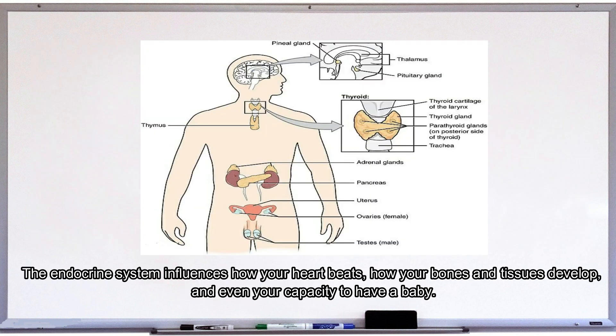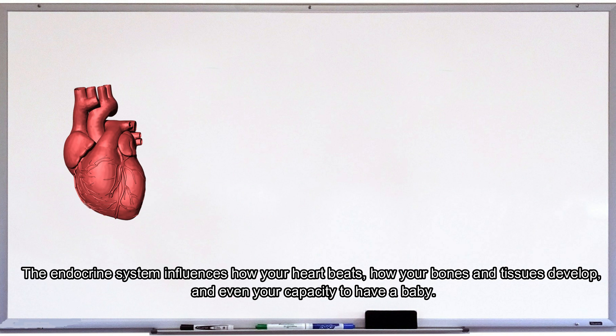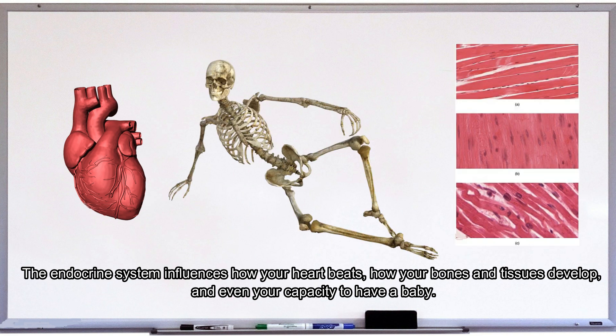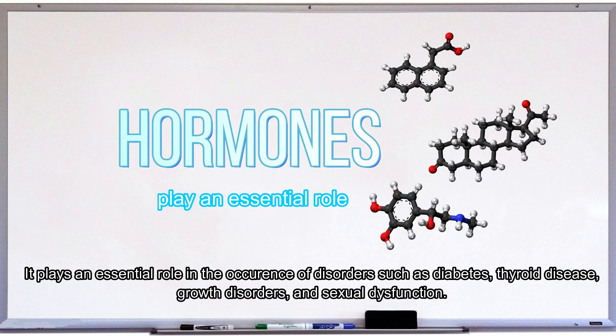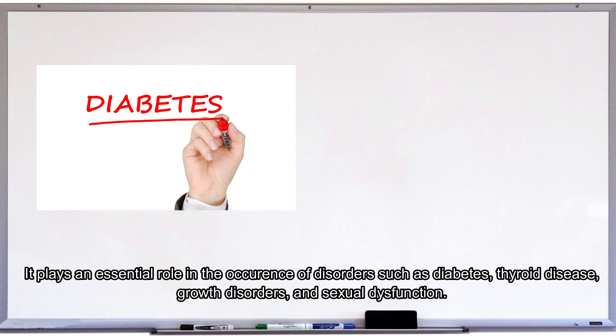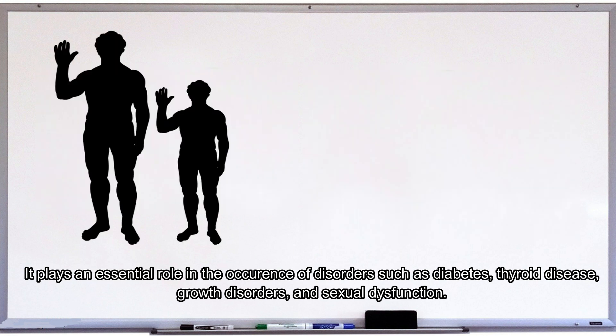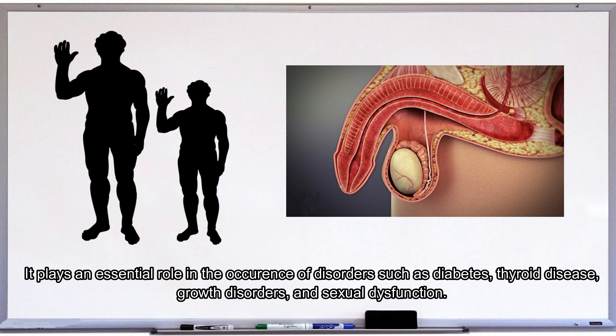The endocrine system influences how your heart beats, how your bones and tissues develop, and even your capacity to have a baby. It plays an essential role in the occurrence of disorders such as diabetes, thyroid disease, growth disorder, and sexual dysfunction.